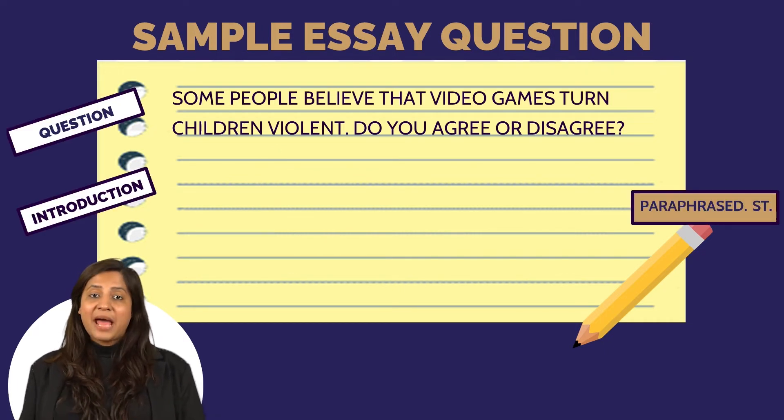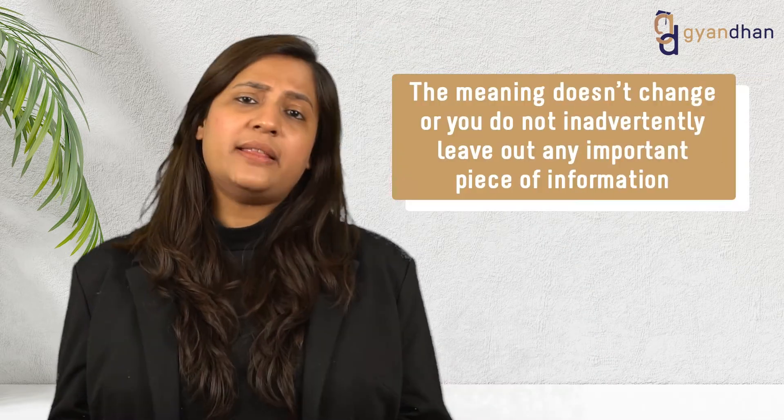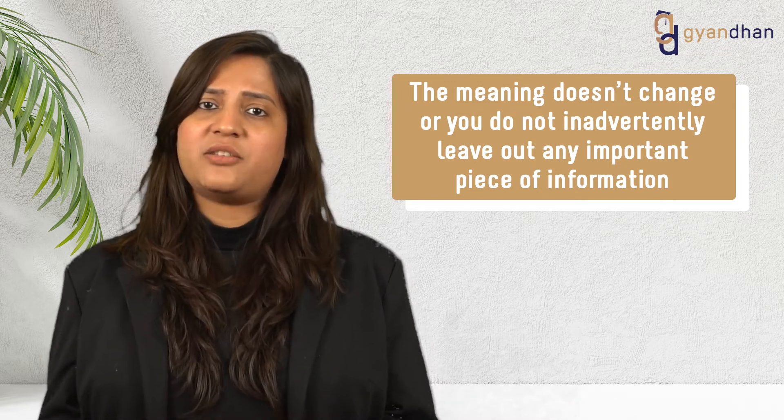Here is a paraphrase statement: 'A set of individuals think that youngsters become aggressive by playing video games.' There are countless other ways to paraphrase the same sentence — you could use 'perceive' or 'claim' in place of 'believe,' 'a few individuals' in place of 'some people,' and 'the youth' or 'young ones' could replace 'children.' You could even change the sentence structure by converting active into passive voice. Just ensure the meaning doesn't change and you don't leave out any important information.